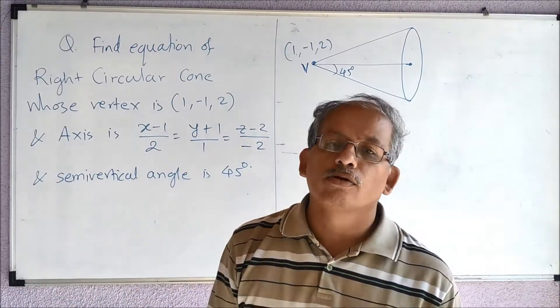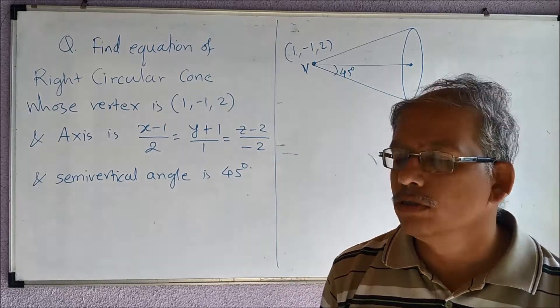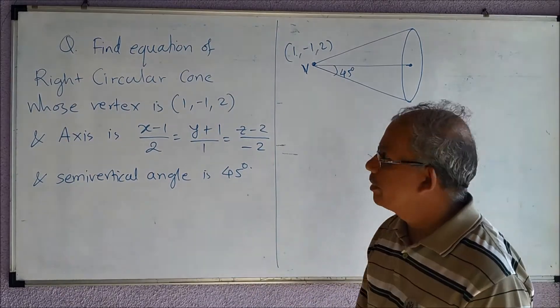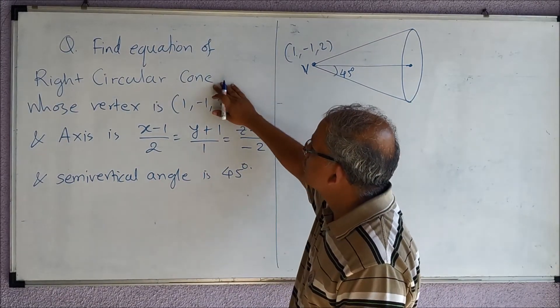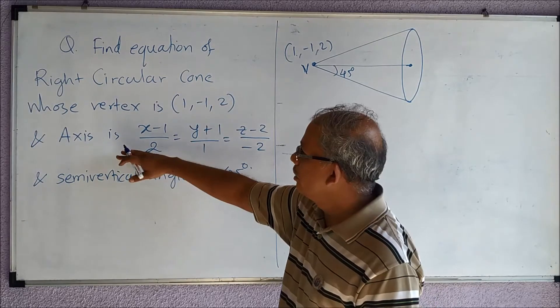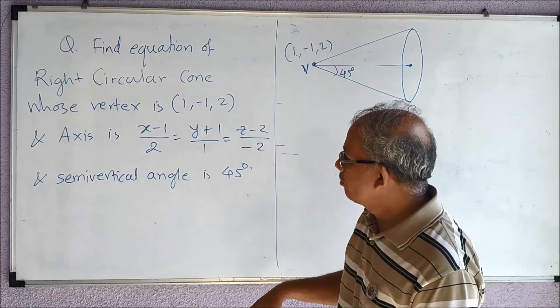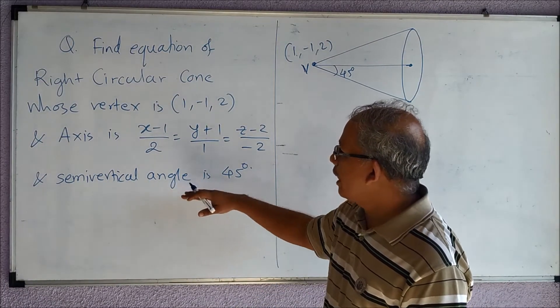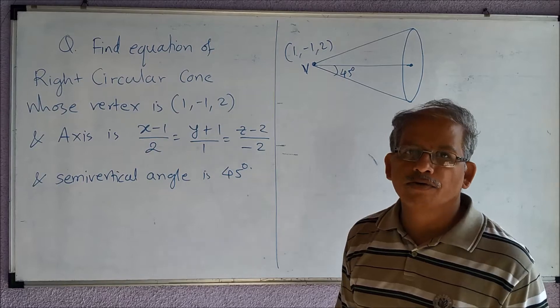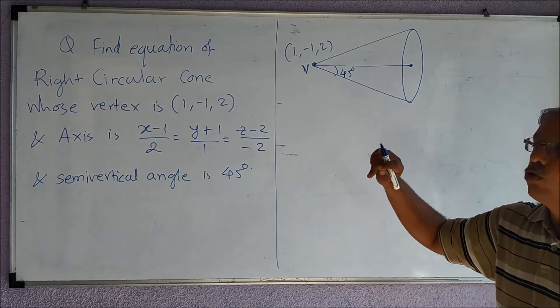Okay, hello friends. Now let us take one example of equation of a right circular cone. So here I am given a problem: find the equation of a right circular cone whose vertex is at (1, -1, 2) and the axis is given, so this is a linear dimension, and the semi-vertical angle is also given.